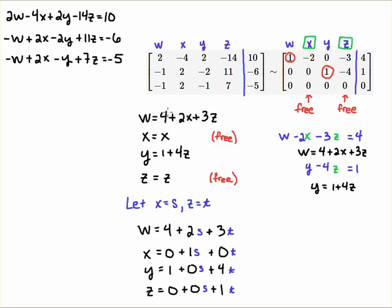And what you can do here now, if you notice, I'm just going to rewrite this system here down here. So I have W is equal to 4 plus 2S because X is now going to be replaced by S plus 3T because Z is replaced by T. Then here I have X is equal to 0 plus 1S plus 0T. So there is no constant and there is no Z term with the X.